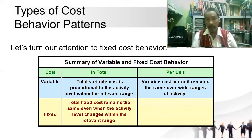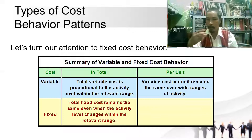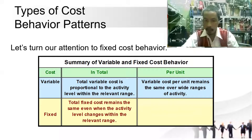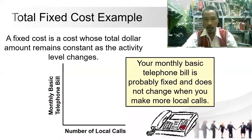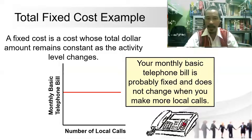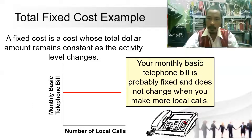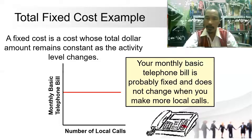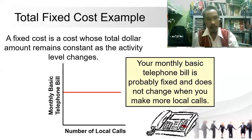Continuing the types of cost behavior patterns, let us add fixed cost. In total, total fixed cost remains the same even when the activity level changes within the relevant range. A fixed cost is one whose total peso amount remains constant as the activity level changes. For example, your monthly wi-fi bill is constant per month — whether or not you use the service, you pay the same amount.